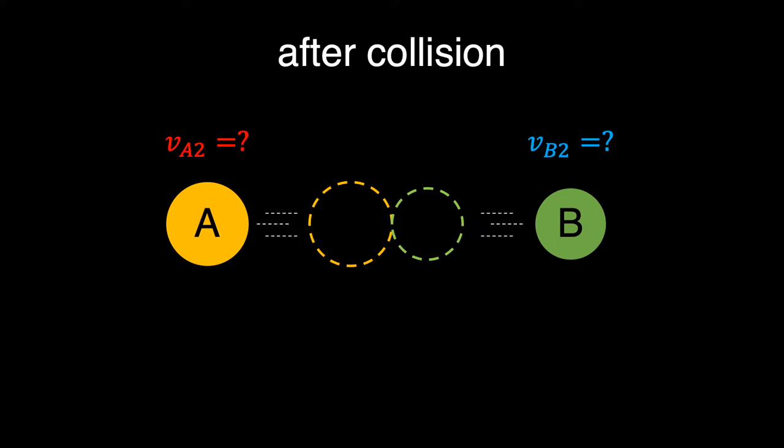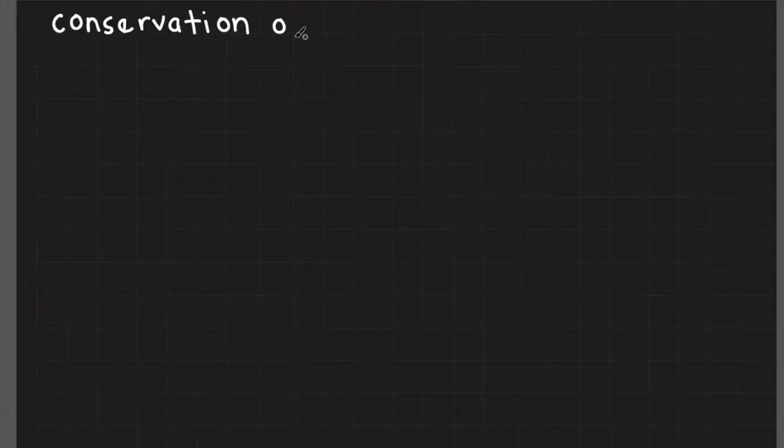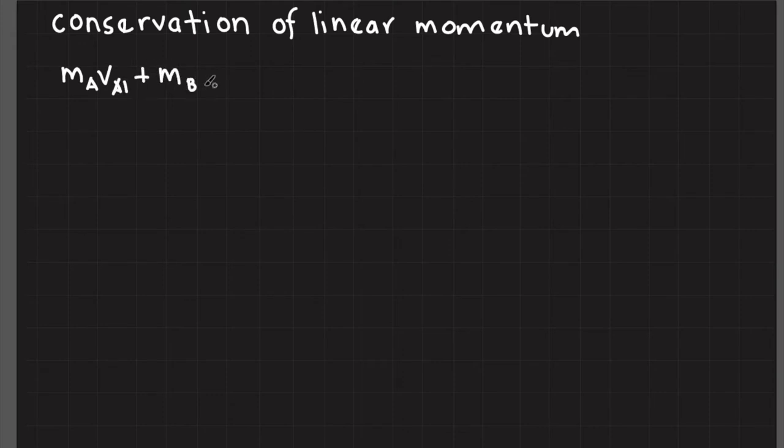Therefore, we can assume that the system is an isolated system, and we can exploit conservation of linear momentum. Here, I write down initial total momentum is equal to final total momentum.